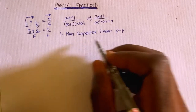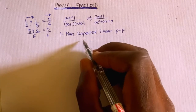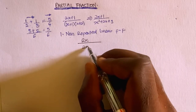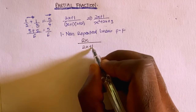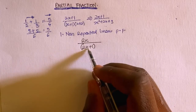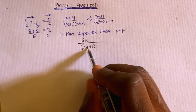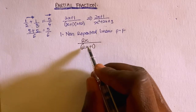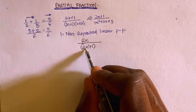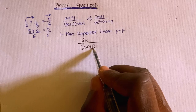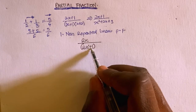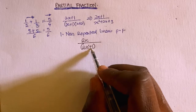To give an example of non-repeated linear partial fraction: suppose we have 2x divided by (2x + 1). In this case, we check the power of x at the denominator side — the power of x is equal to 1, and since 2x + 1 is a linear equation, this is a non-repeated linear partial fraction.